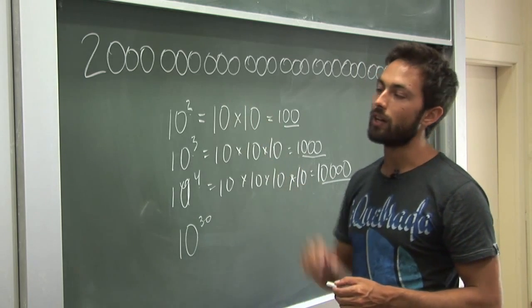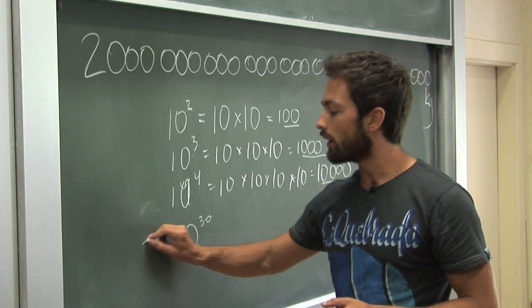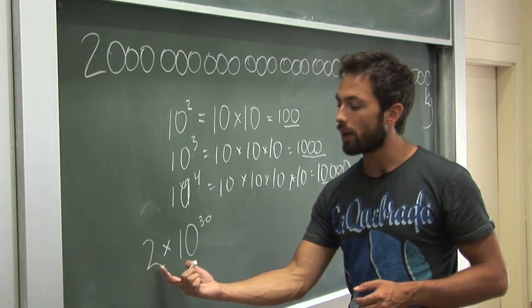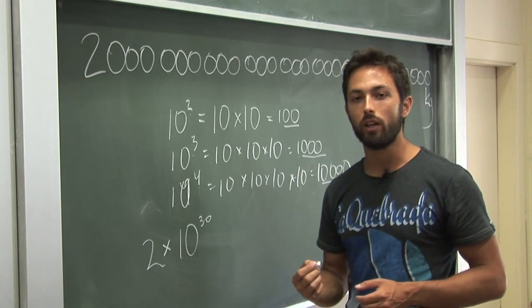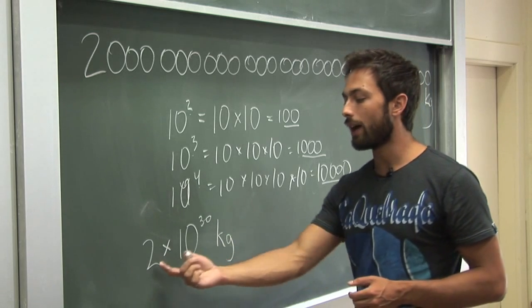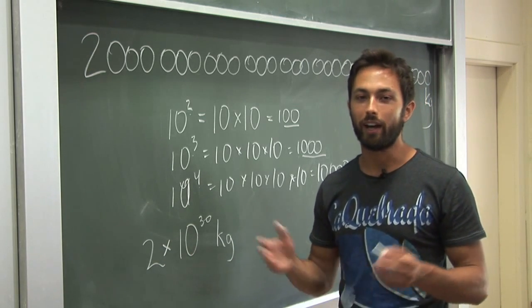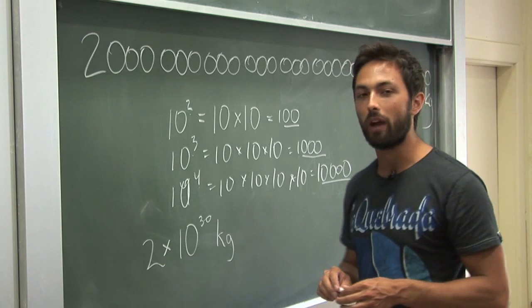But the mass of the sun is actually twice that. It's 2 followed by 30 zeros. So we can multiply 2 by 10 to the 30 in units of kilograms, and that is the mass of the sun. It's a lot easier to write and takes up much less space on the page.